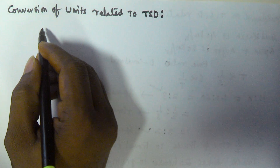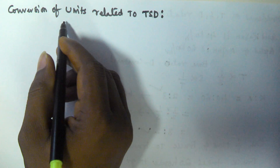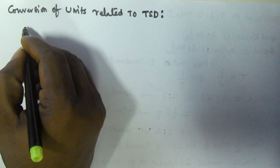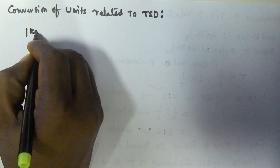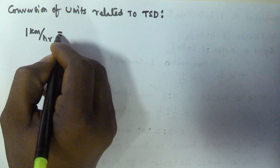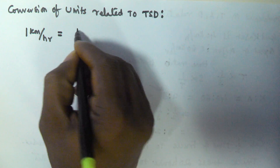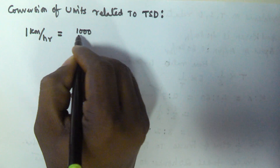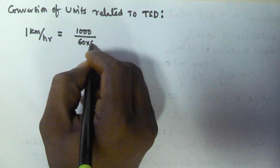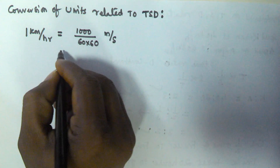Hello friends, in this video we will see the conversion of units related to time, speed, and distance. If speed is one kilometer per hour, that is going to be equal to one kilometer, which is thousand meters, divided by one hour, which contains 60 into 60 seconds. So this is meters per second.